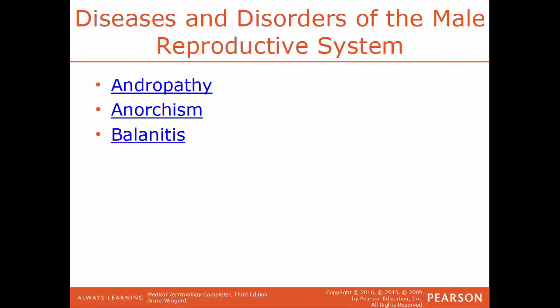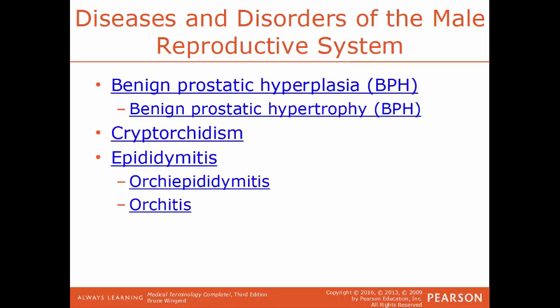BPH, benign prostatic hyperplasia, is the formal term for an enlarged prostate. This can also be referenced as benign prostatic hypertrophy — both reference the same thing, a swollen prostate gland. Cryptorchidism is a condition where the testes have failed to fully descend outside of the body. Epididymitis is an inflammation of the epididymis. When this inflammation involves both the epididymis and the testes, that condition is called orchioepididymitis. If you have inflammation of just the testes — either one or both — that would be orchitis.